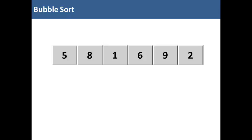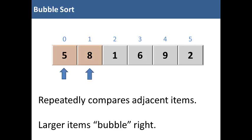So we have six items in our unsorted list of integers. We're going to number them from zero to five. Now the way the bubble sort works, it repeatedly compares adjacent items in the list. And then if the item on the left is larger, it swaps it to the right. So larger items tend to bubble to the right.